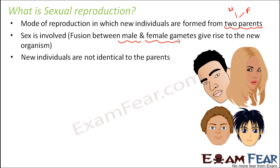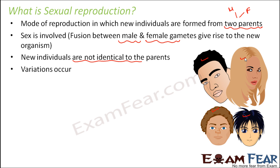Here the new individuals are not identical to the parents; however, they have similarities. Like this guy has black hair which he got from his father, and this guy has brown hair which he got from his mother. But it is not that the children will be exactly identical to the parents — very rarely you see that. Some differences will always be there. So here variations occur; these differences are called variations.